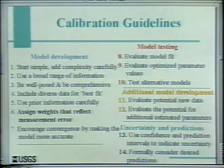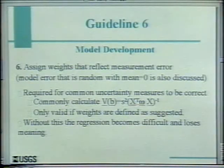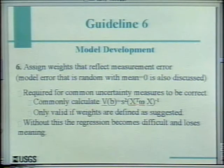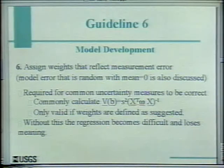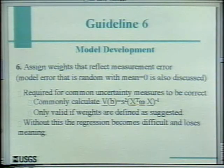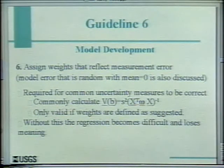Number six is: assign weights that reflect measurement error. I'm putting 'measurement' here in quotation marks because it's measurement error in the broader context. You have to take account of the fact that you're taking a measurement and comparing it to a model. It might not just be the analytical measurement — how good was my tape, how well did I get the elevation of that well. Also, for example, there are places where the hydraulic gradients are very steep, and when we compare that to the model, our register only has to be off a little bit and we can get very big errors. There are some model errors that, as long as they're random with a mean of zero, can be included in the same structure.